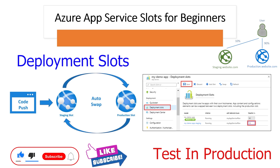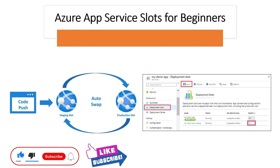In this demo, we are going to create a deployment slot and then we will deploy a web app from Visual Studio to this deployment slot. Then we will swap to production slot and we will see how it works and how we can roll back also.